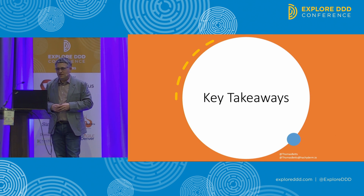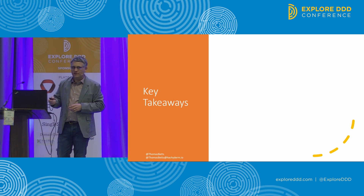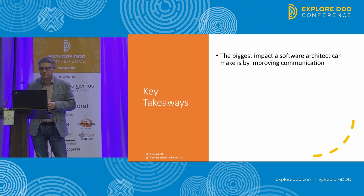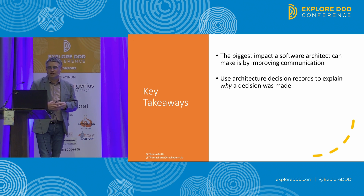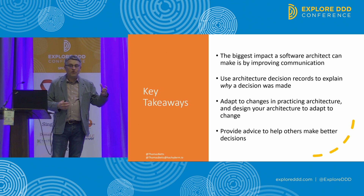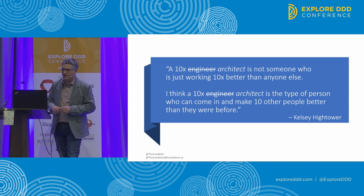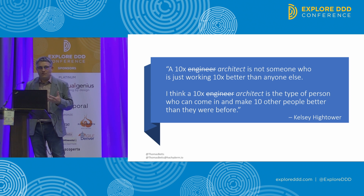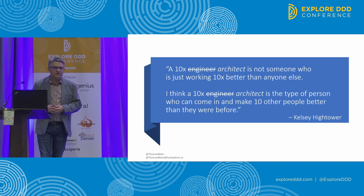So wrapping up, I want to revisit the four topics we covered today. Because every software problem is really a communication problem, the biggest impact a software architect can have is by improving communication — know your audience, find new and effective ways to communicate. When making decisions, use architecture decision records to explain why a decision was made. Be adaptable both in how you practice architecture and in the architecture you design. And finally, be a leader by providing advice to help others make better decisions. You become that 10x architect not when you're doing the work of 10 people, but when you make 10 other people more effective at what they're doing.